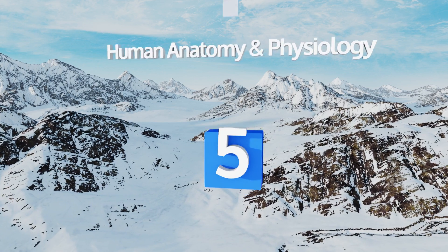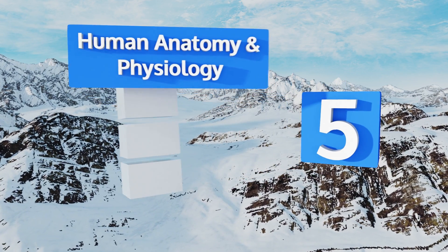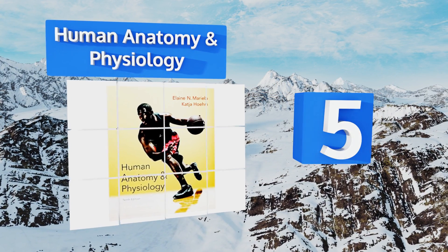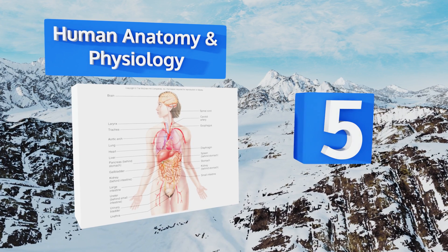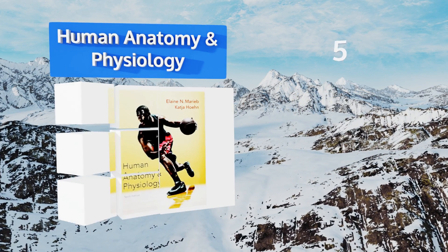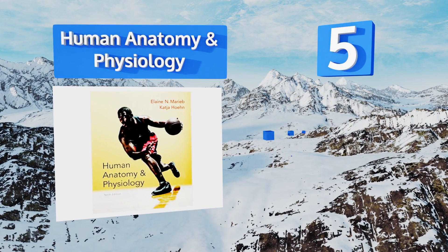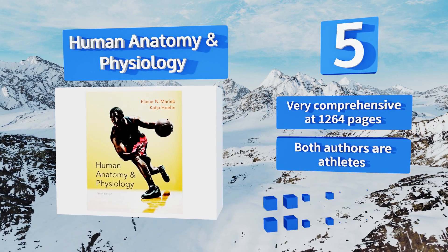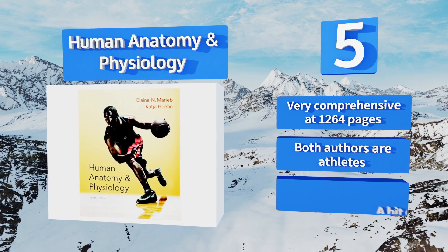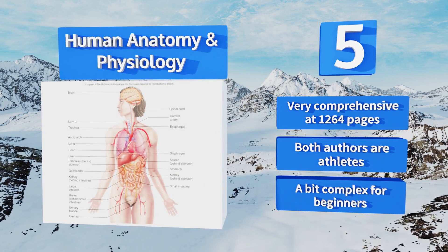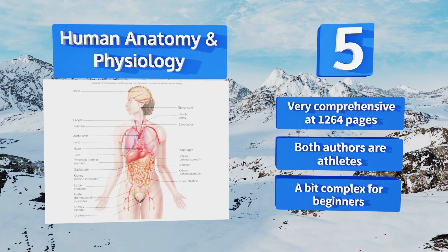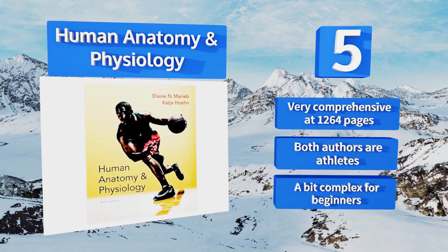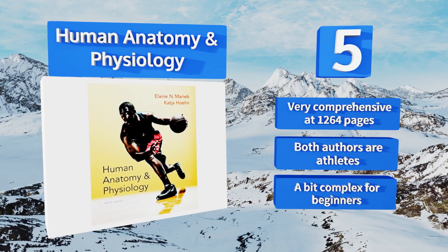Halfway up our list at number five, Marieb and Hoehn's Human Anatomy and Physiology is a must-have for anyone interested in the human body, and for those studying sports medicine in particular. It helps create an understanding of our systems and how they work together and conveys key concepts with clarity. It's very comprehensive at 1,264 pages and both the authors are athletes, but it's a bit complex for beginners.